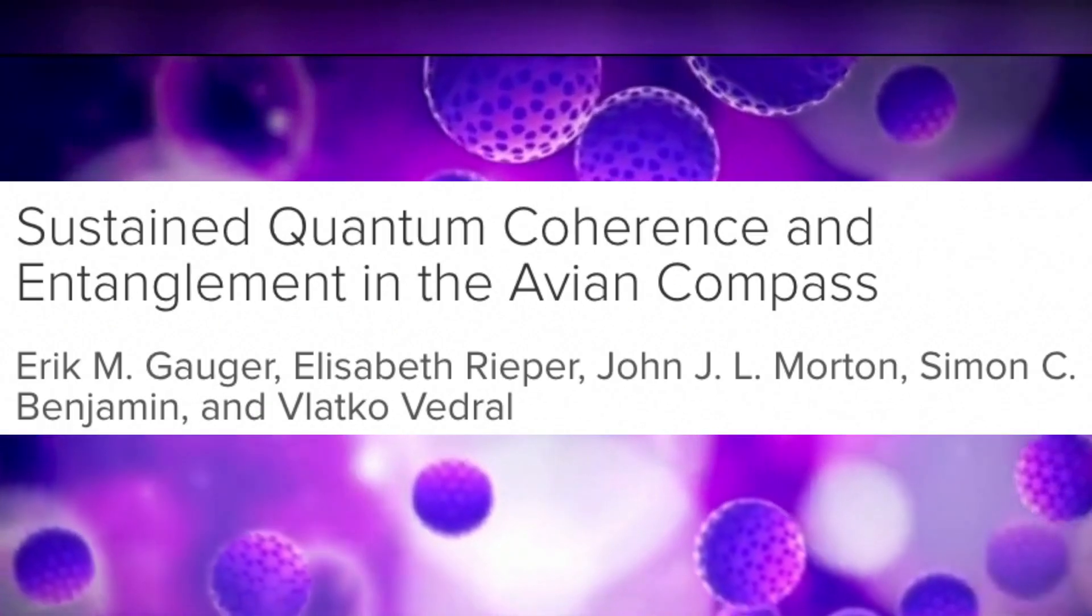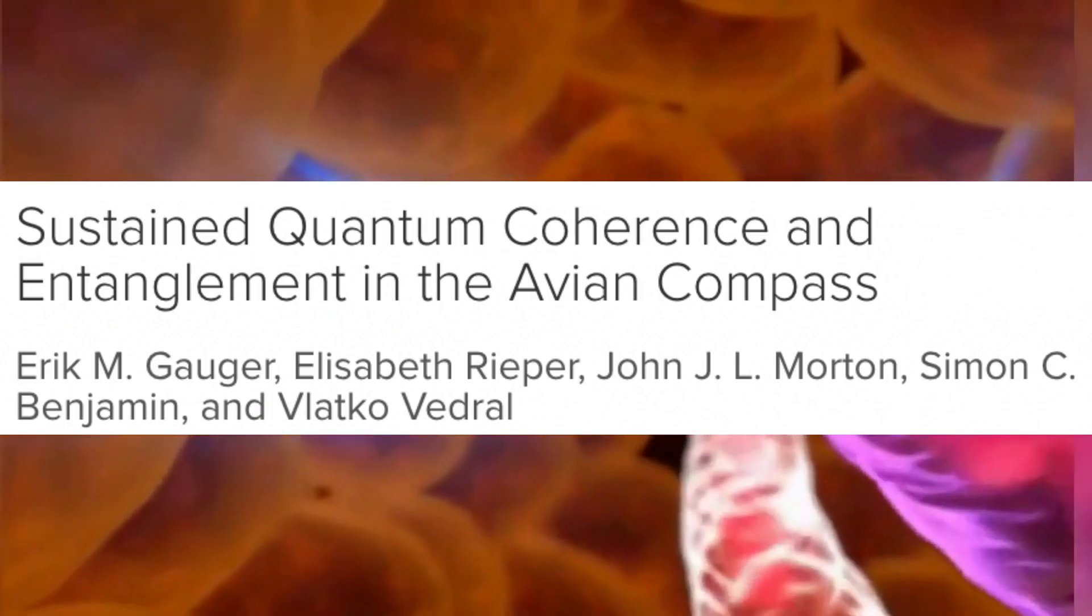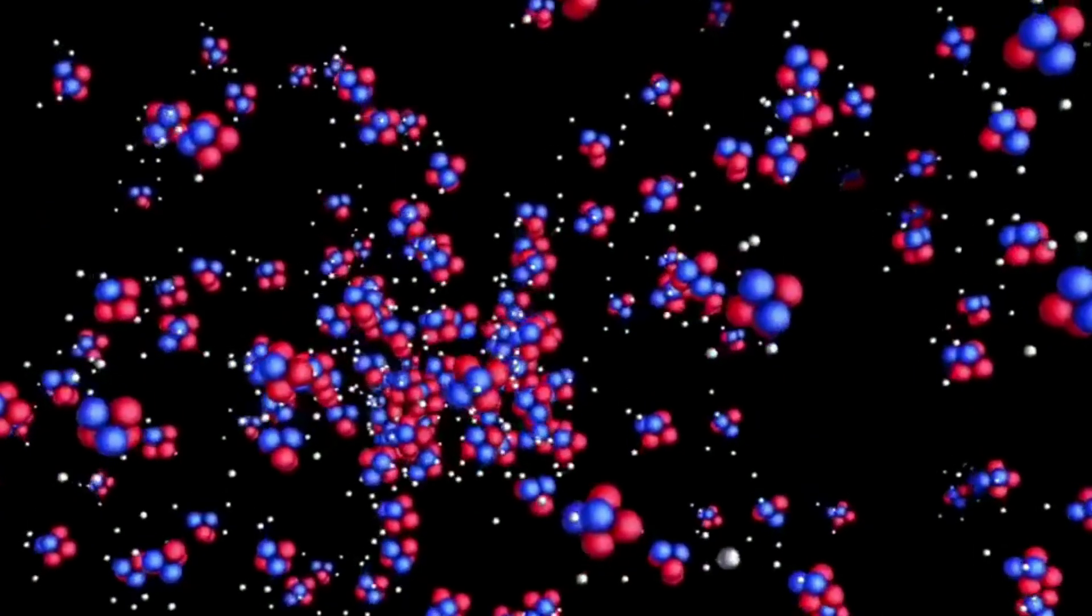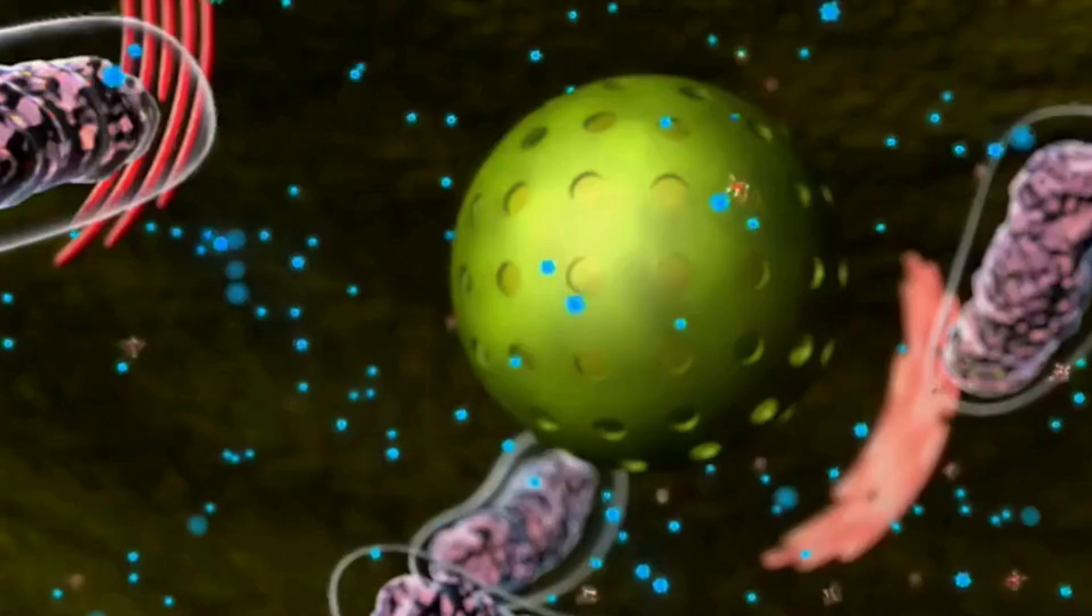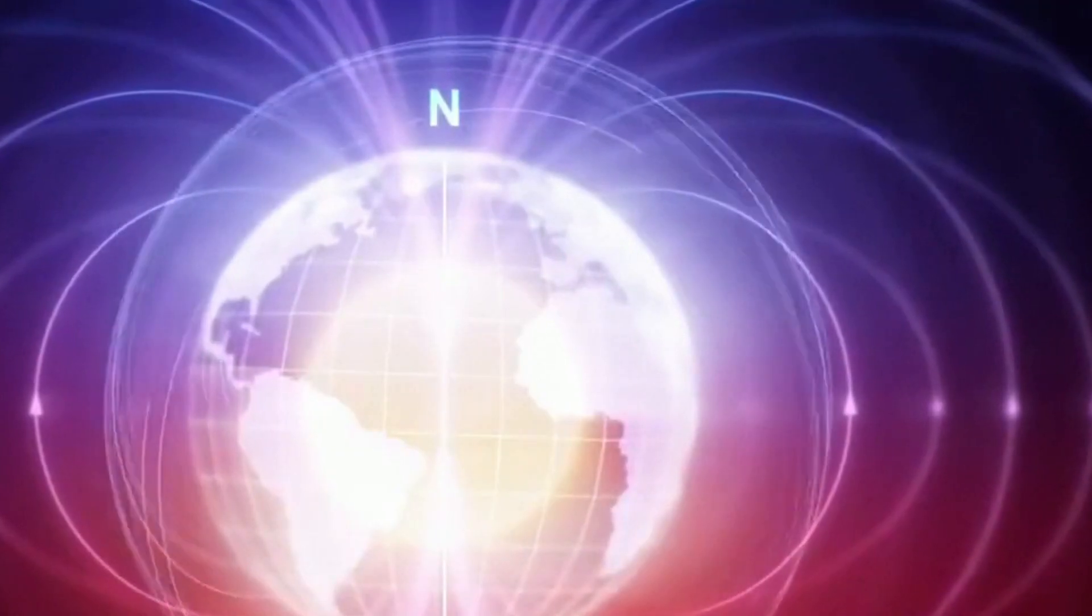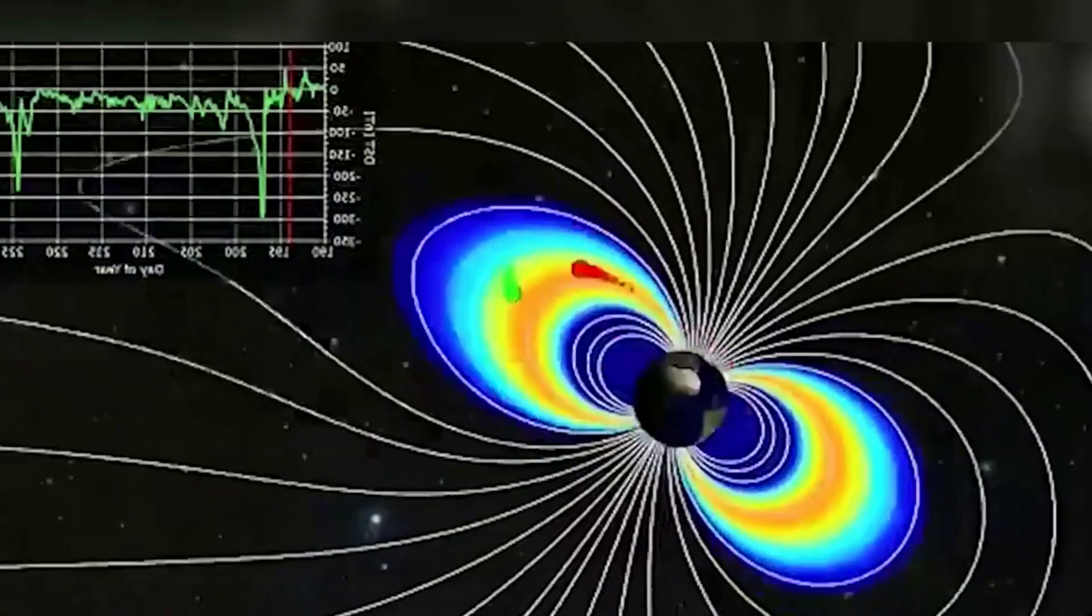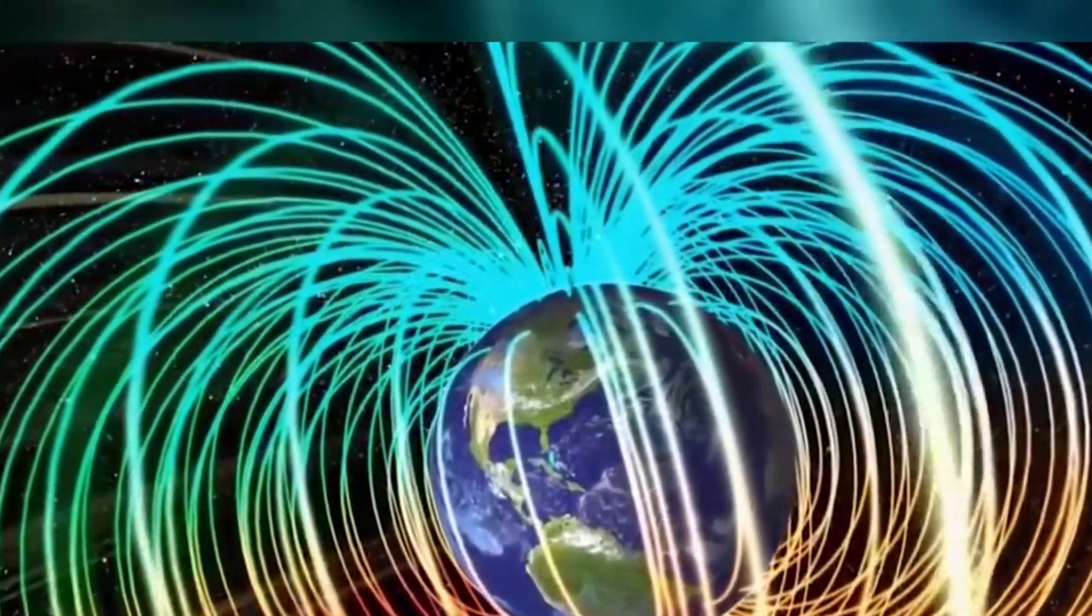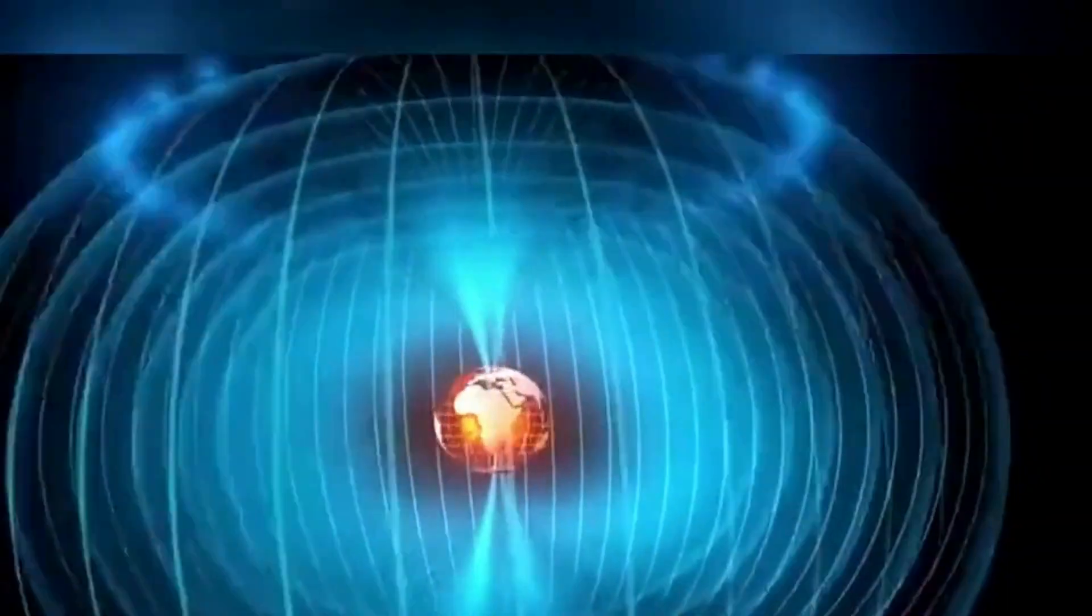The radical pair rapidly oscillates between having spins aligned or anti-aligned with each other. Spin refers to the angular momentum of the electrons, which gives the molecule a magnetic property. As a result, the time spent in each aligned or anti-aligned state is incredibly sensitive to external magnetic fields. In fact, birds can detect changes thousands of times weaker than the strength of the Earth's magnetic field.